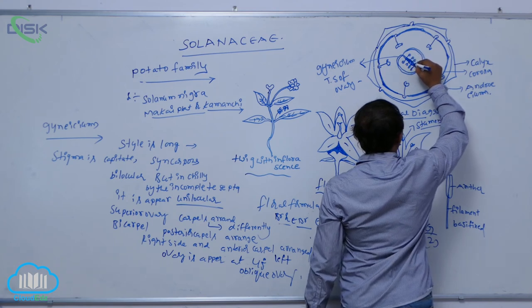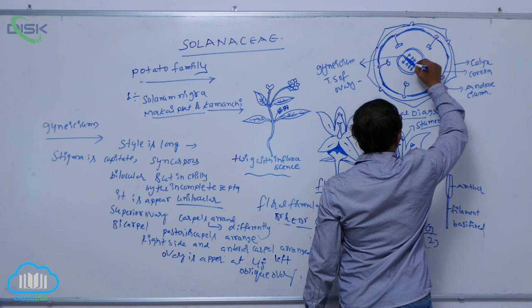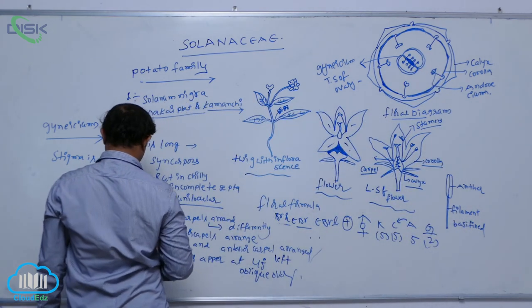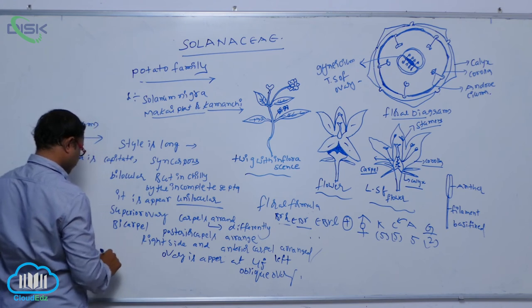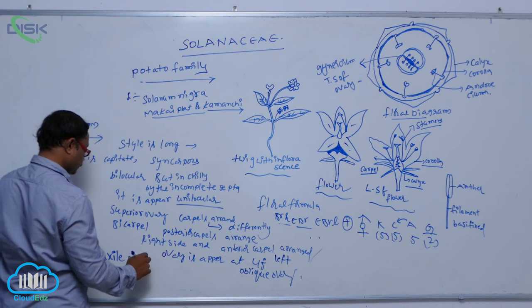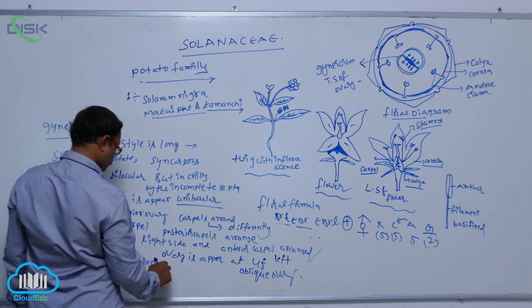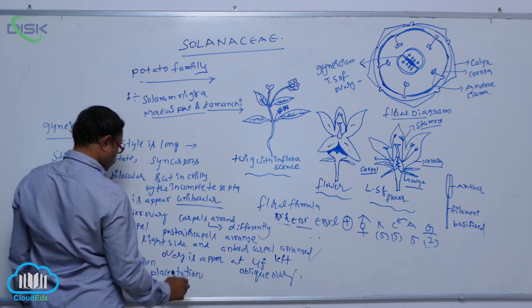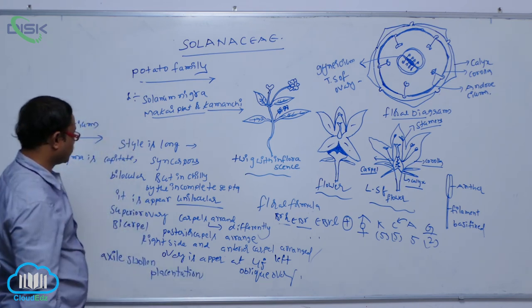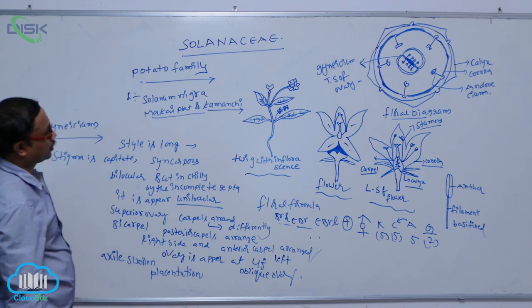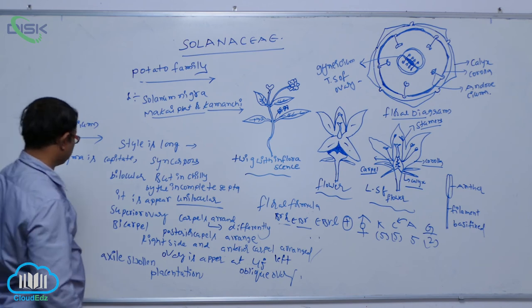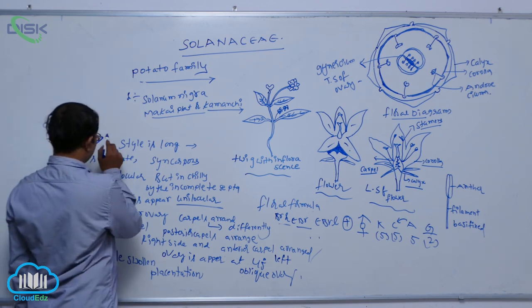After that, the placentation is axial — axial swollen placentation. The ovaries are attached at the placenta, and the placenta becomes swollen, so that is an axial swollen placentation. That is the indication of this gynoecium.